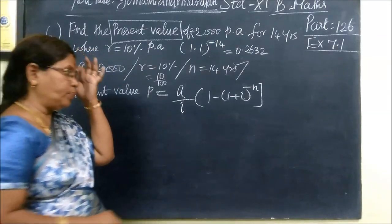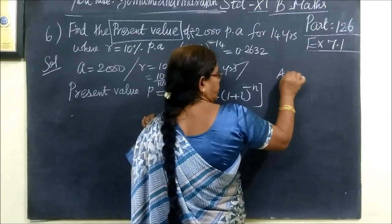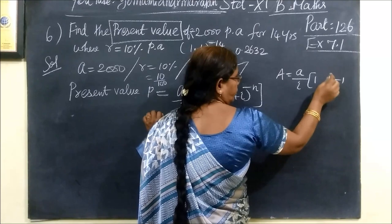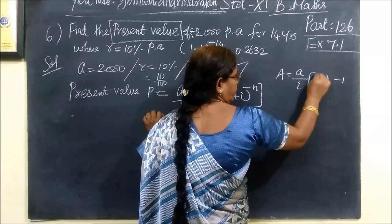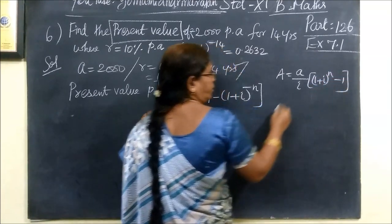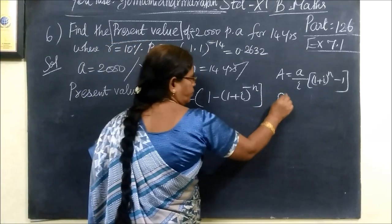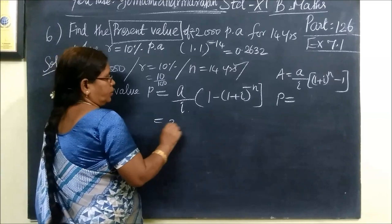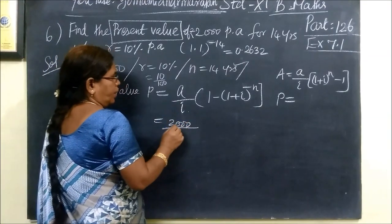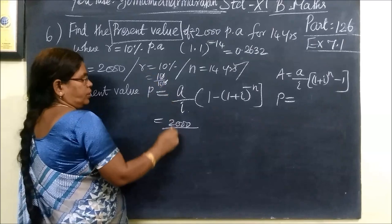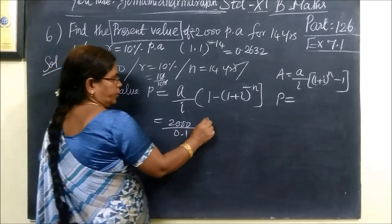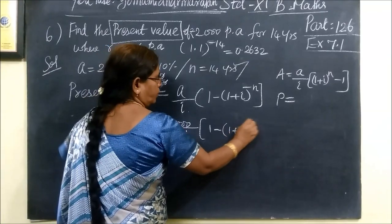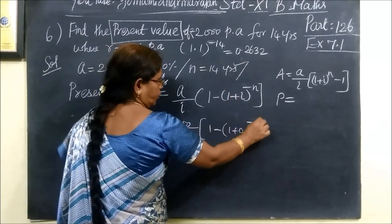The formula is P equals A by I, 1 minus 1 plus I power minus N. So A equals 2000 by I value. I is 0.1, then 1 minus 1 plus 0.1 whole power N equals 14 years.